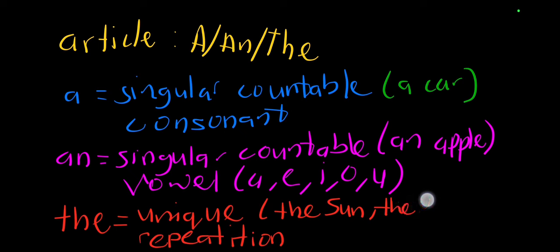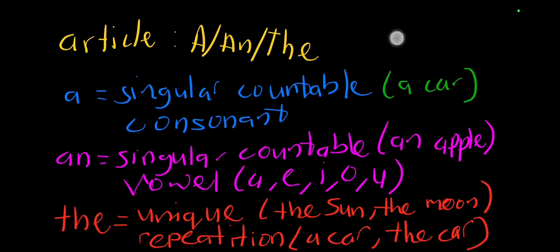Lastly, article 'the' - we use it for anything that is unique, like the sun, the moon. There's only one sun, one moon; it is unique. We also use it for any type of repetition. First we say 'I have a car', and then when you want to talk about that car again, you say 'the car is blue'. So anything that you repeat, you have to use the article 'the'.